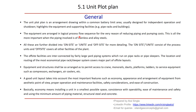This is all the more important when the piping involved is of stainless and alloy steel, because when stainless and alloy steel is involved the cost will be more. We need to be very careful in understanding the logical process sequence, and only then can we reduce the piping. We divide the unit definition into two parts: on-site and off-site. On-site means a process unit; off-site covers all other facilities of the plant.